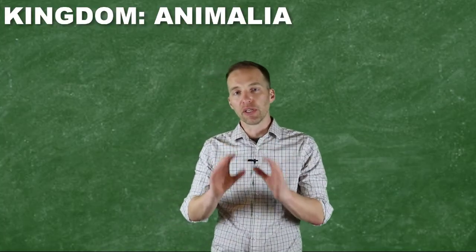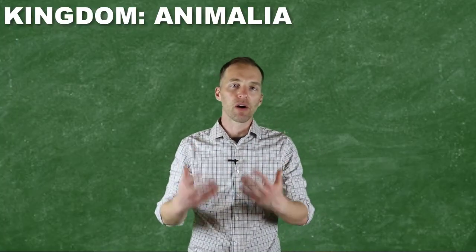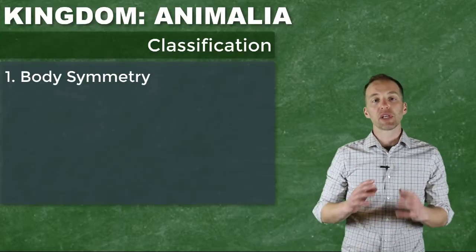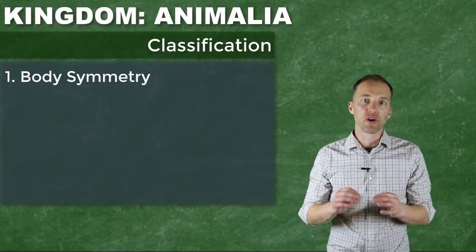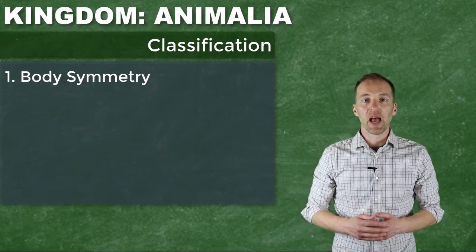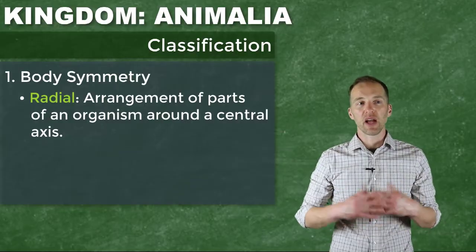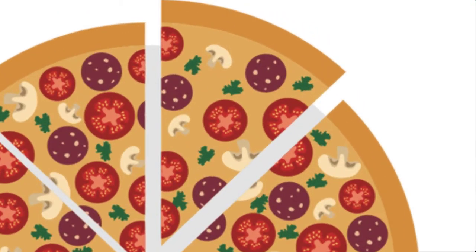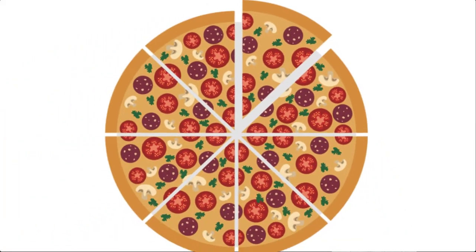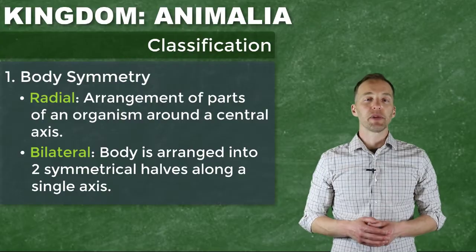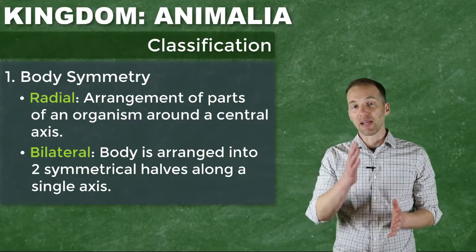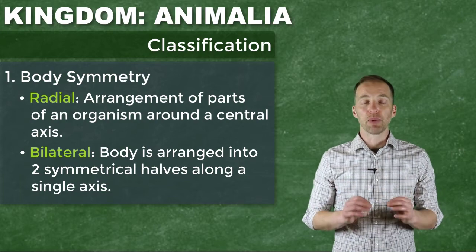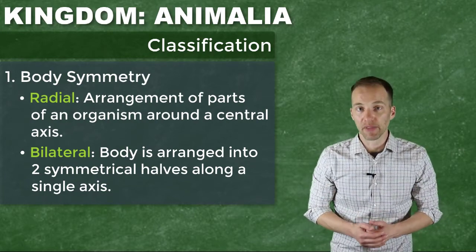Before we go into the different groupings in this kingdom, we have to think about how we are going to classify them — what characteristics are we going to look at? The first thing is something called body symmetry. There are a couple of different body symmetries. First, we have radial symmetry. You can envision this if you were cutting up a pizza or a cake — each section would be identical to any other section. The other type is bilateral symmetry, where if we were to take a mirror and bisect an organism, the right side would look similar to the left side.